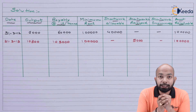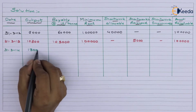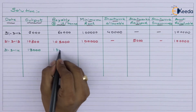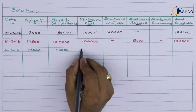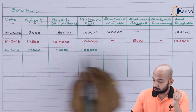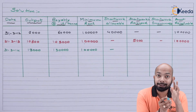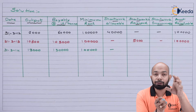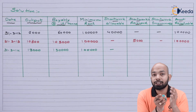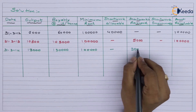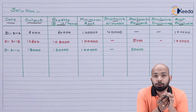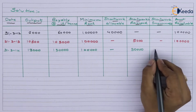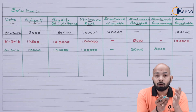For 31st March 2014, the output is 13,000 tons so royalty is ₹1,30,000, and the minimum rent is ₹1 lakh. There is no short working; instead, there is an excess of ₹30,000 that can be adjusted against the remaining balance of ₹35,000 (₹40,000 minus the ₹5,000 already adjusted). Since this is the end of the third year, whatever balance remains — ₹5,000 — is irrecoverable. The amount receivable is ₹1 lakh.